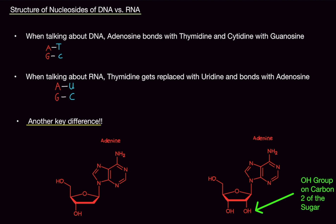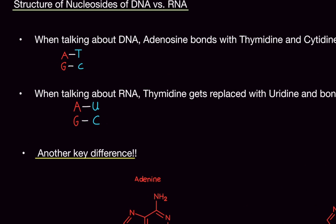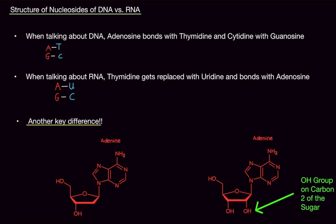When talking about RNA, thymidine gets replaced with uridine and bonds with adenosine. So in DNA, A always matches with T and G matches with C. But in RNA, the T's go away and get replaced with U. So A bonds with U and G bonds with C.